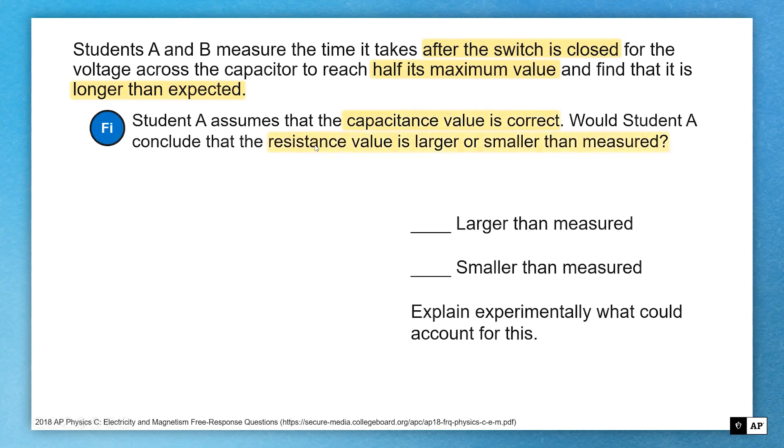So student A assumes the capacitance that they measured was correct, like that had to have been right. So would you then conclude that the resistance would be larger or smaller? This is very common. This is known as error analysis. We're saying something's different. How would this affect the outcome? Well, you should think about what changed and what's constant.